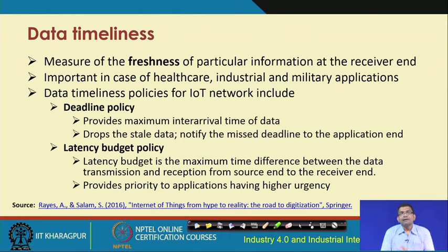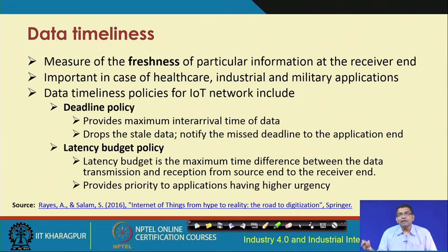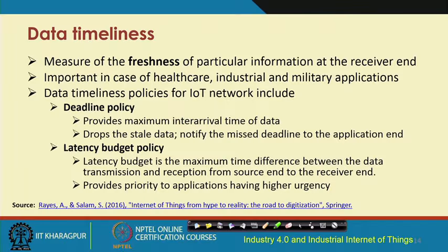Timeliness, the second attribute, is basically the measurement of the freshness of particular information when it is received at the receiver end. From source to receiver, when the sensed data is received, how fresh that data is - this is a very important consideration particularly for applications with safety criticality or real-time requirements, for example healthcare where a patient is having a heart attack. It is a very important QoS criterion to measure whether the data received at the receiver end is fresh enough and has been received timely.